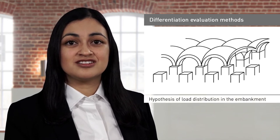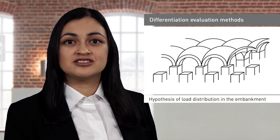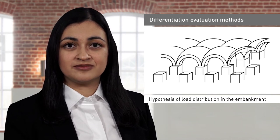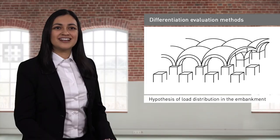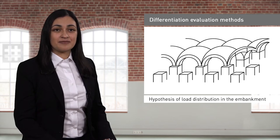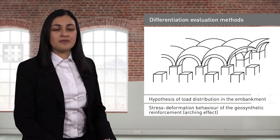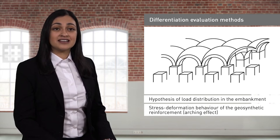The first is the hypothesis on the distribution of stresses in the body of the embankment. As a result of the difference of rigidity between the rigid piles and the embankment, a concentration or redistribution of stresses occurs from the most deformable zone to the most rigid one. This redistribution is most widely known as the arching effect,